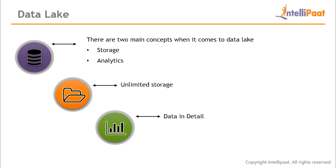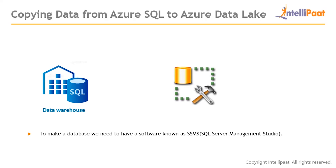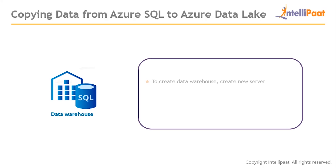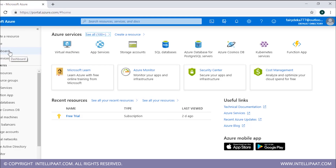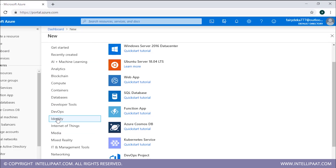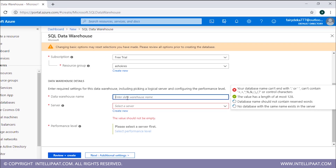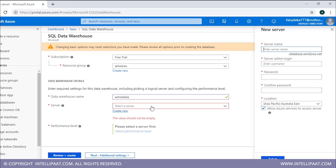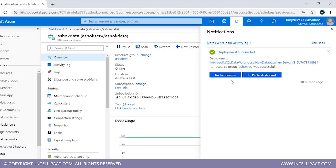Now let's move on to the copying process. We need to create a new data warehouse in Azure, then install SQL Server Management Studio to connect to an Azure SQL database. Create a new server in the data warehouse, configure and deploy it. After successful deployment, open SSMS and connect using SQL authentication. In the Azure portal, go to Dashboard, create a new resource, select Databases, and create a new SQL Data Warehouse with a new resource group and new server, then configure the performance and create.